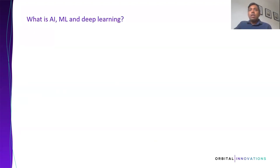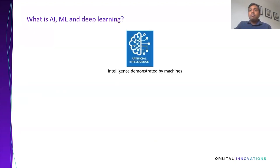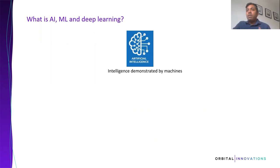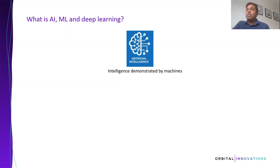So what's AI? AI is nothing but intelligence demonstrated by machines. We all have intelligence — similarly, when a machine demonstrates such intelligence, it's just called artificial intelligence. Nothing more than that.